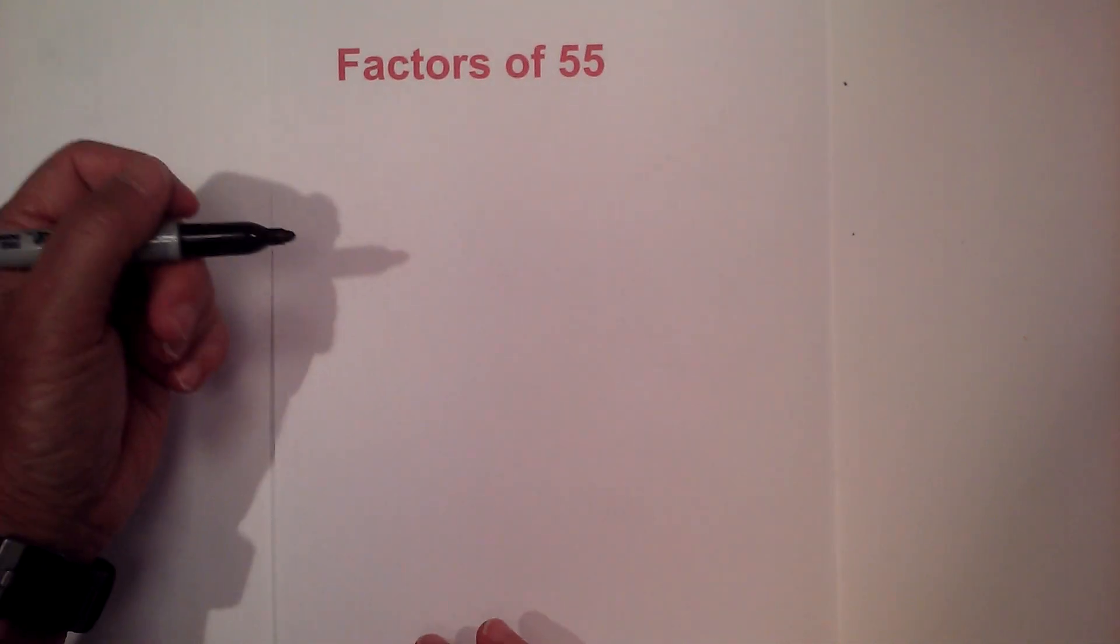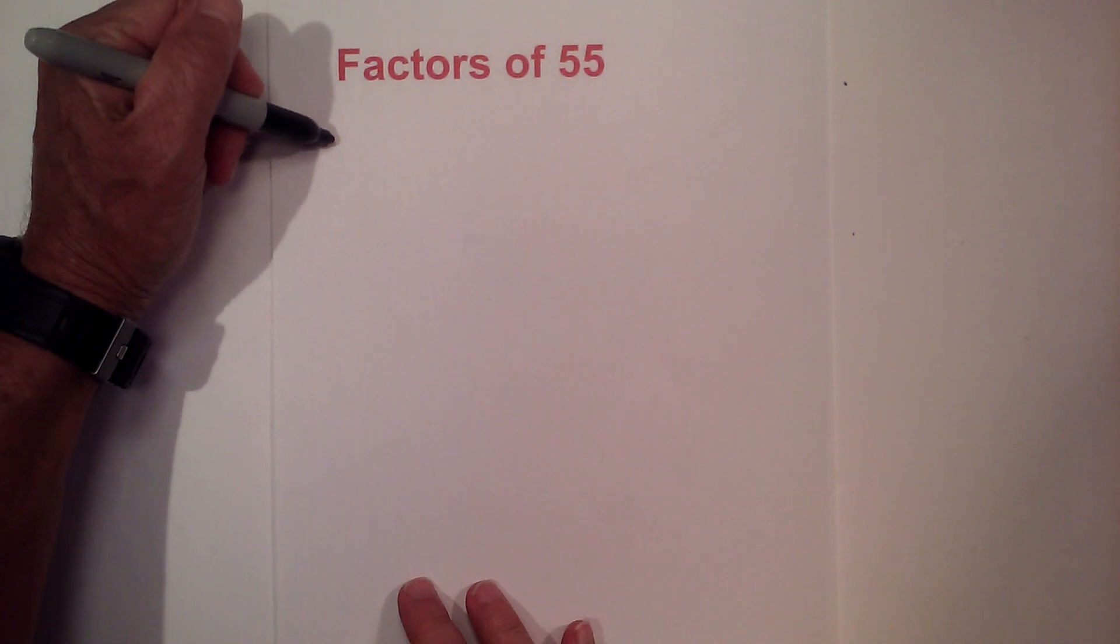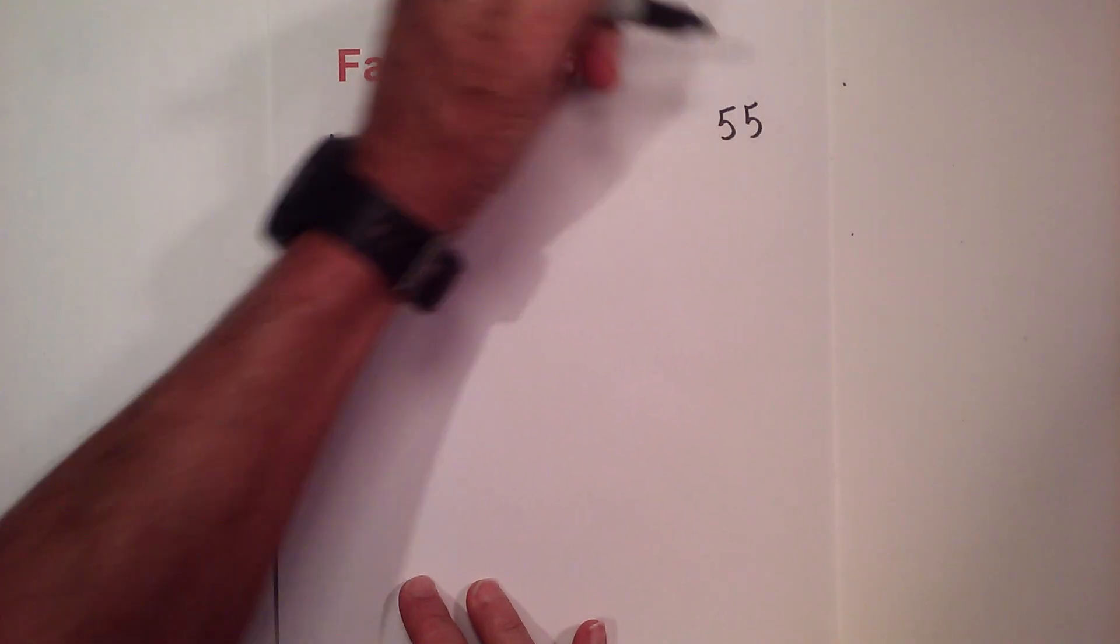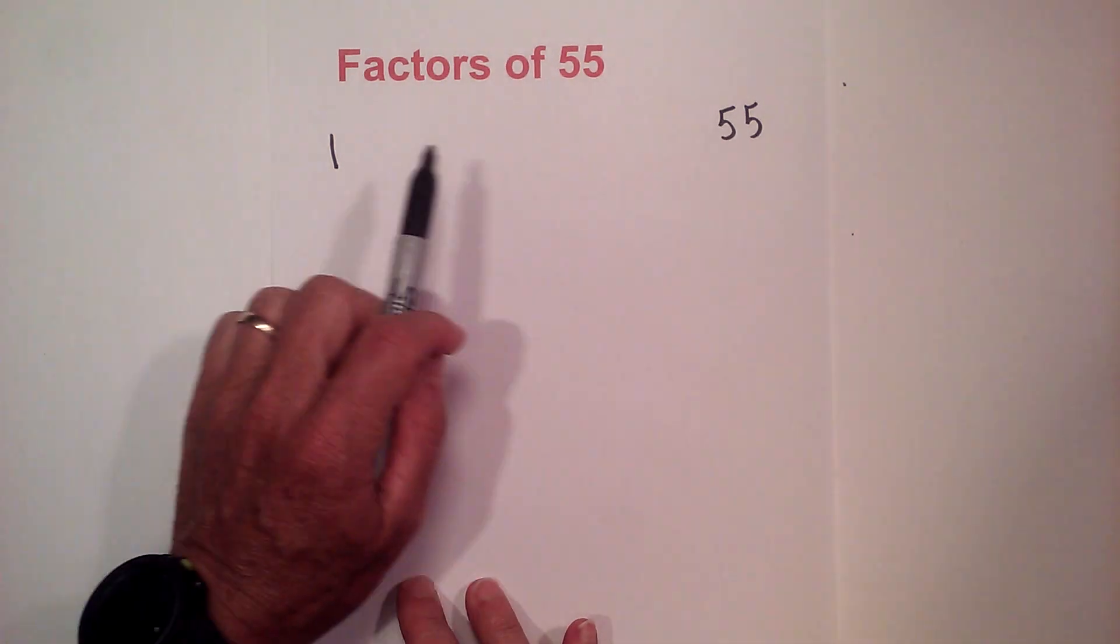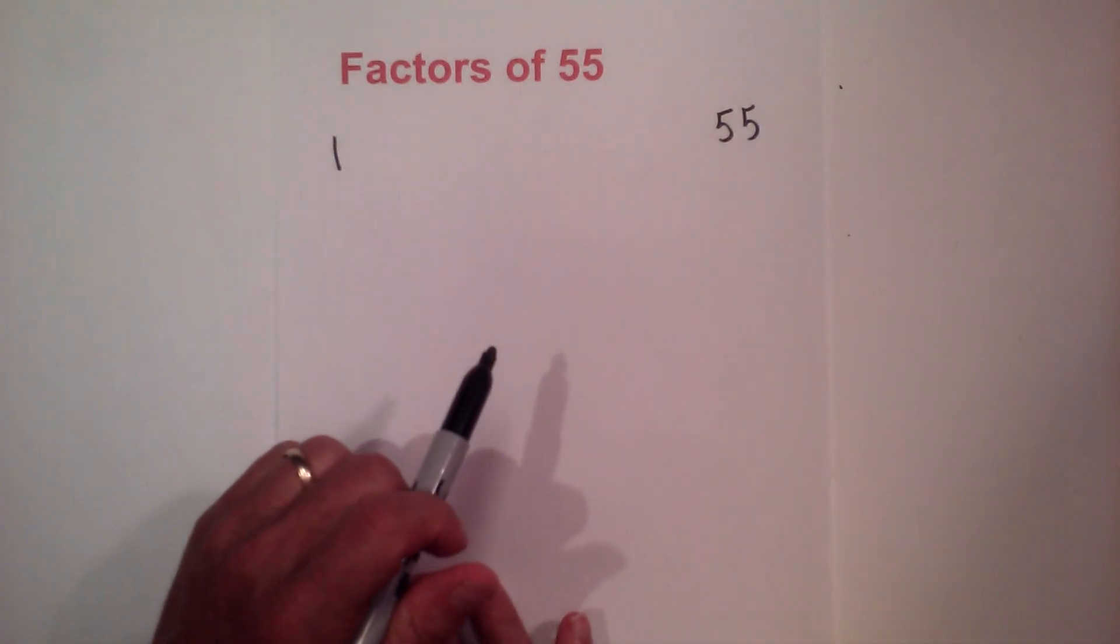The factors of 55. Let's get started. I like to find them by starting with 1 times 55 and then find all the factors in between 1 and 55 that multiply together to equal 55.